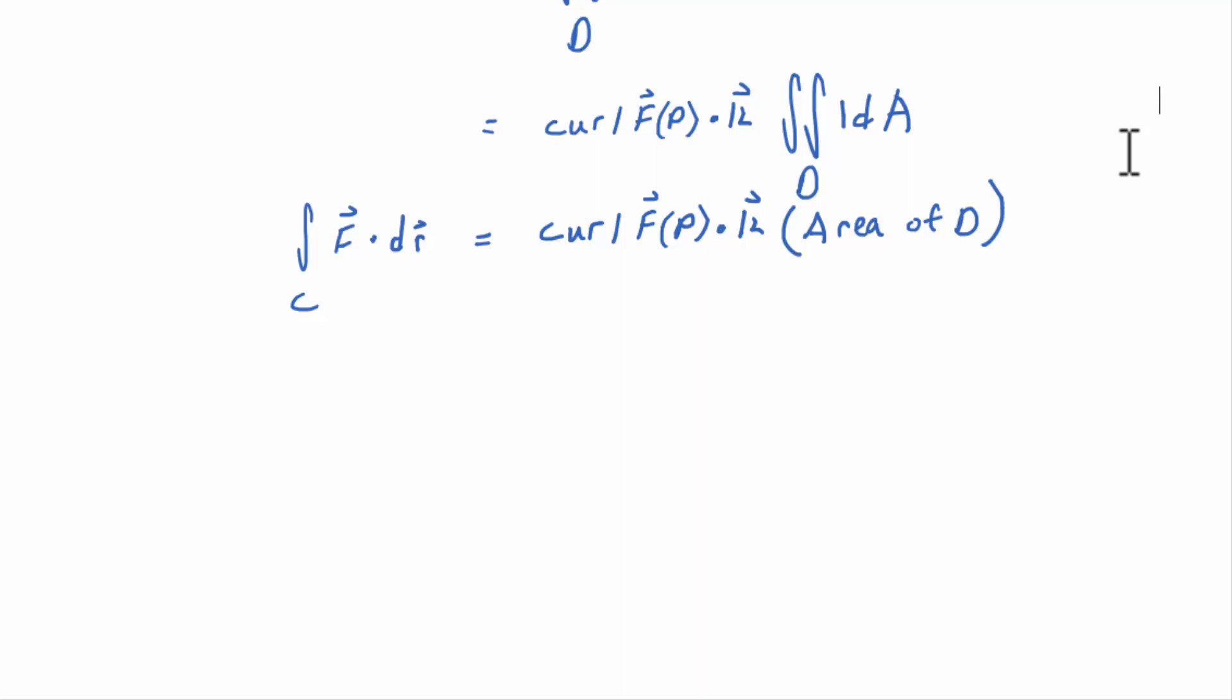So if I turn this around so that I have the curl on the left side, curl F at P dotted with K would equal the integral over C F dot dR over area. Now, you already have the tools to come up with one interpretation, but it's not really the one we're looking for. We know that integral represents work if F is a force field. So I suppose the curl of F at P dotted with K can represent some sort of work done per unit area. That's a work density, sure, why not? But that's not what we're after.